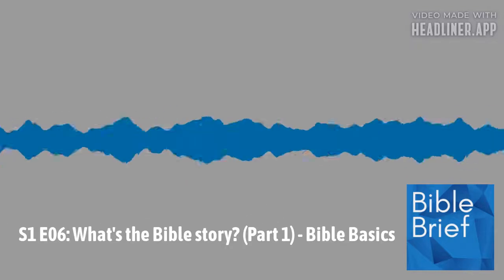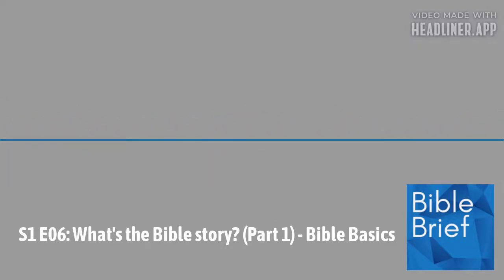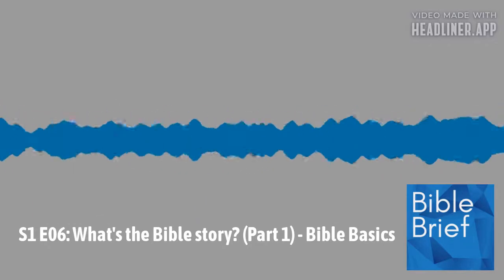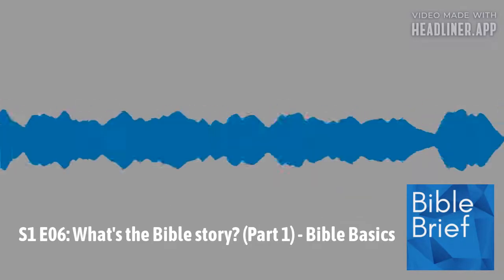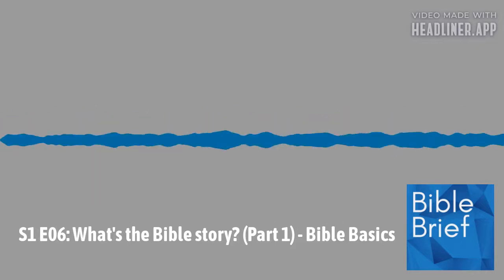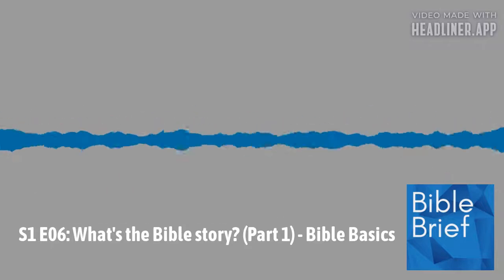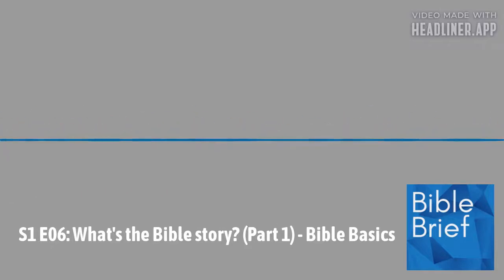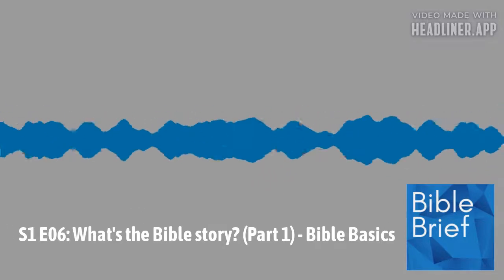There was now separation — confusion and accusation replaced prior contentment and peace. And now, instead of living forever, they would suffer physical death as well. Spiritual death and physical death become the rule of the human race. Following their disobedient sin, God announces judgments upon Adam and Eve and the serpent, yet in the midst of these penalties and judgments, God's mercy and love shines through.